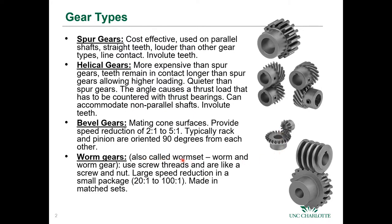Worm gears or worm sets use screw threads, much like a screw and nut geometry, and can allow large reductions in speed in a small package, like 20-to-1 to 100-to-1. They're made in matched sets. Comparing gear types: bevel gears give 90 degrees with about 2-to-1 reduction; worm gears give 90 degrees with up to 100-to-1; spur gears typically operate at about 10-to-1 for a gear set.